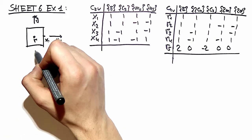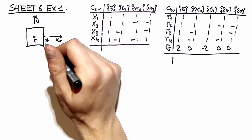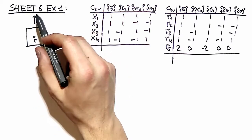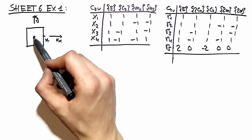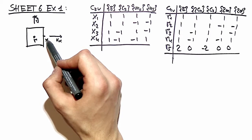This is the first Brillouin zone of our two-dimensional square lattice. This is the kx direction. This is the ky direction. Here we have the gamma point and here is the x point.